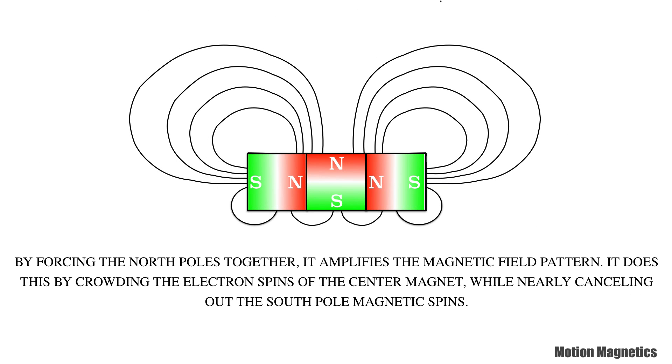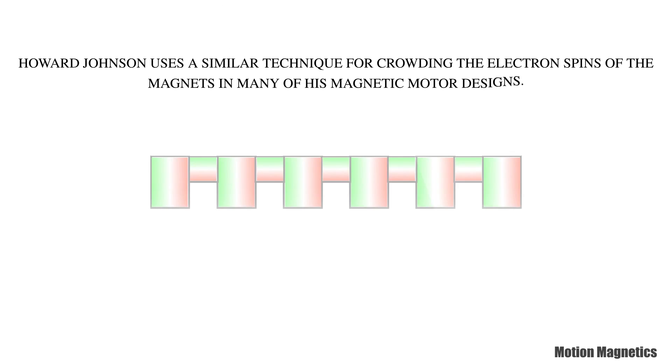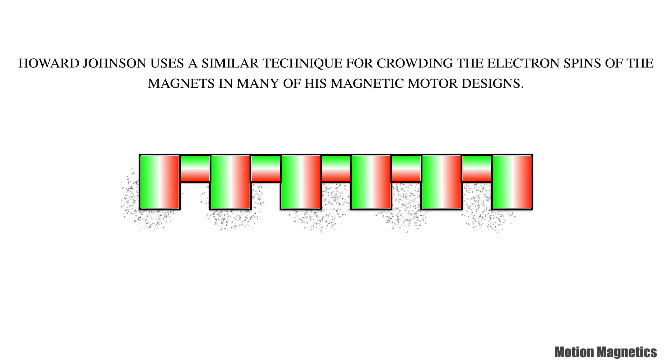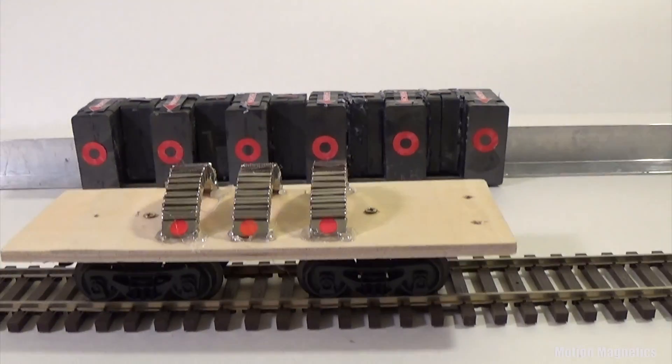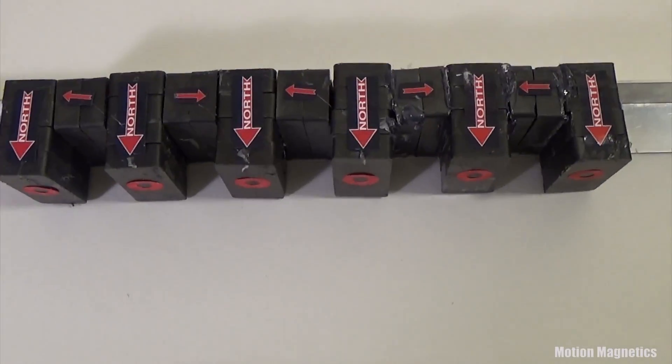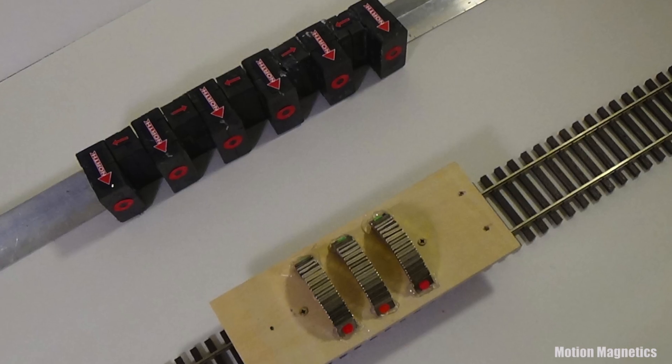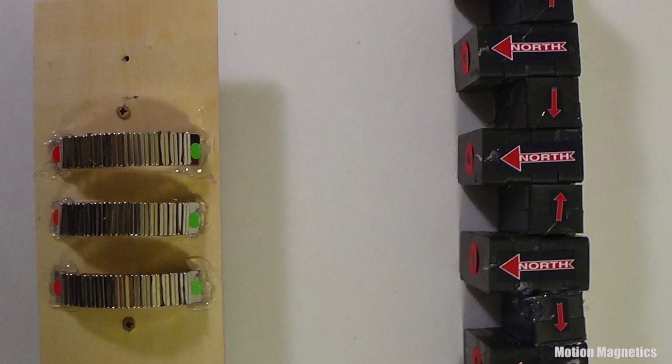It does this by crowding the electron spins of the center magnet while nearly canceling out the south pole magnetic spins. Howard Johnson uses a similar technique for crowding the electron spins of the magnets in many of his magnetic motor designs. So it's obviously going to take some adjustment to compensate for the magnetic orientation variations, but this is going to be a fun project to work on.